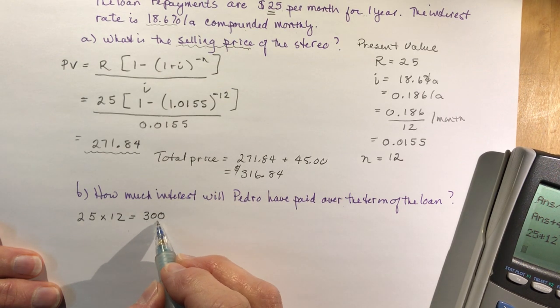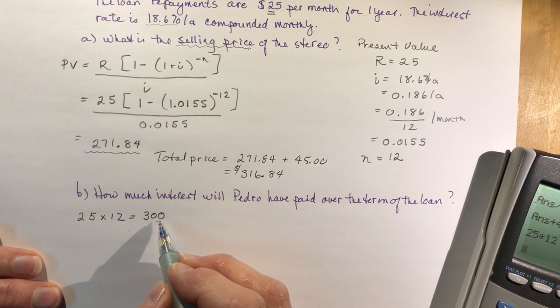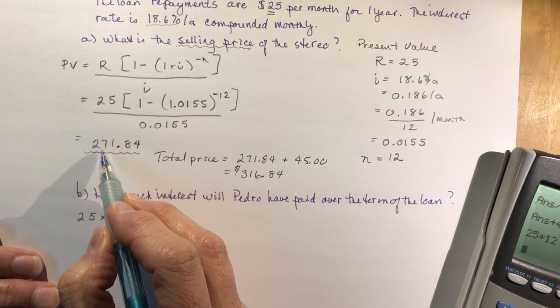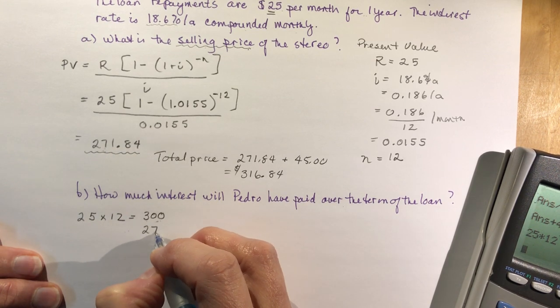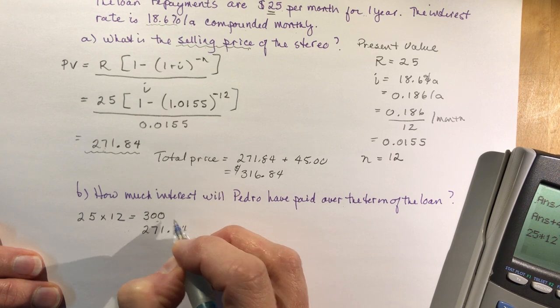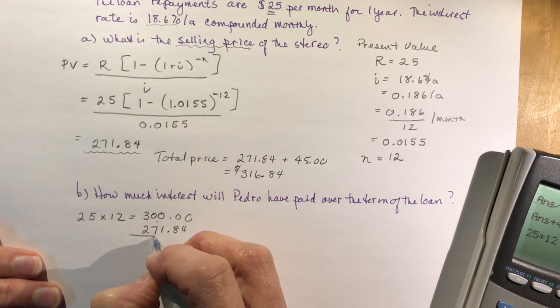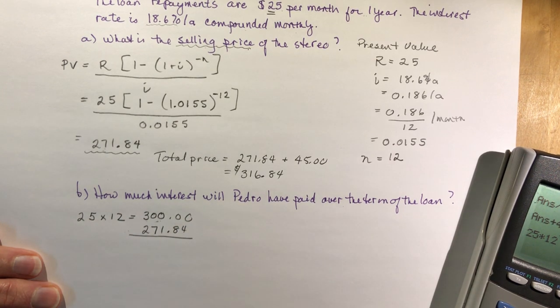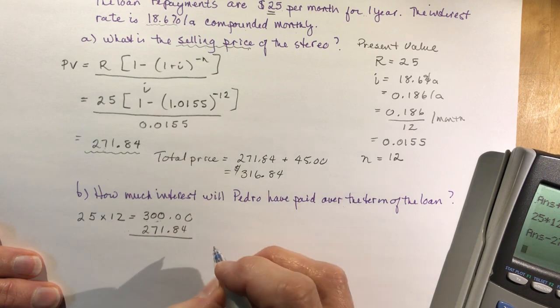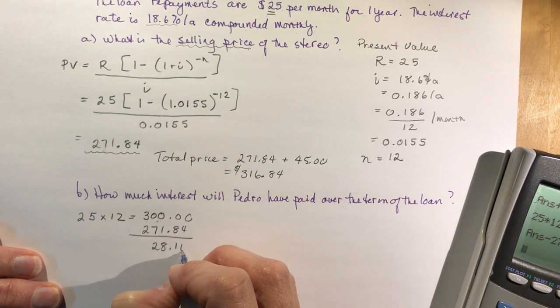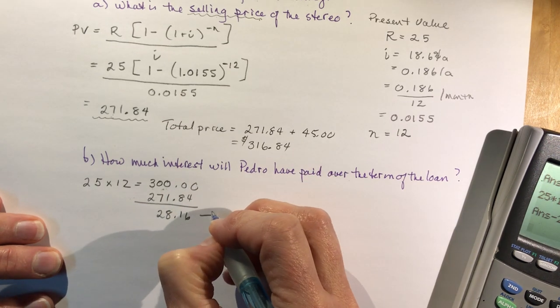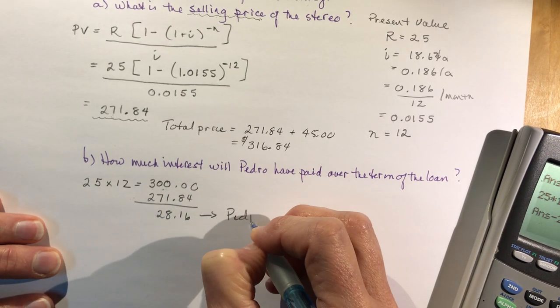$300 was the amount that he actually paid. This is the present value or the selling price of the stereo. So all I have to do is subtract that from the 300, and that would tell me how much extra he paid. He paid more than the selling price, and that makes sense. So that's $28.16, so that's his interest, Pedro's interest.